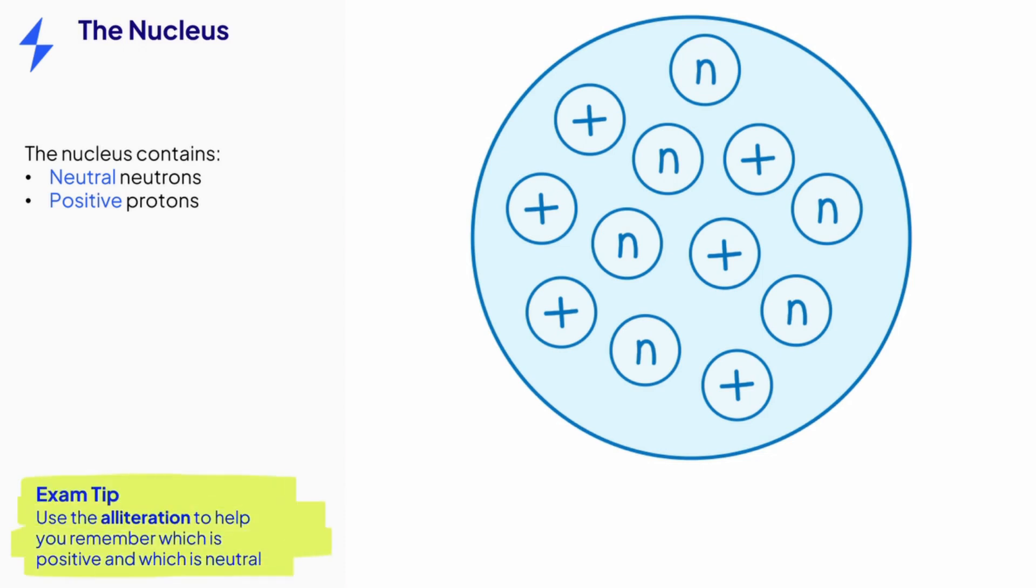If you're struggling to remember the relative charges of these two subatomic particles, the alliteration between their charge and names might help. Neutrons are neutrally charged and protons are positively charged.